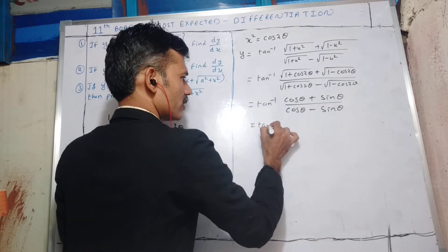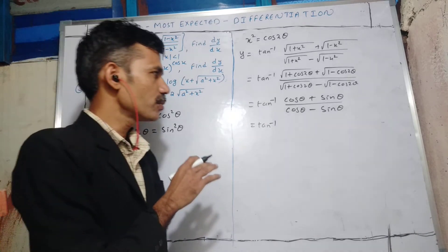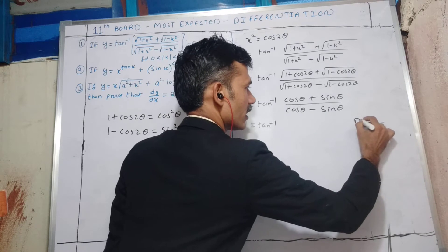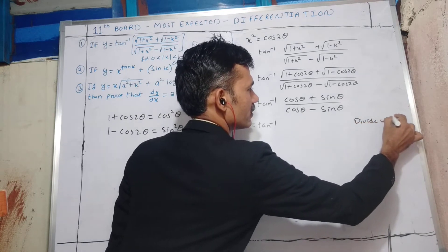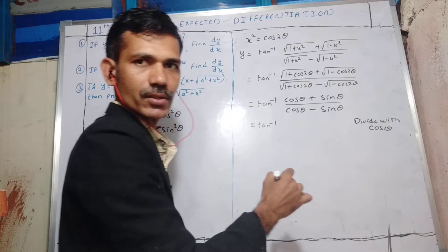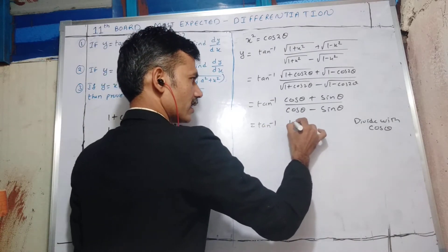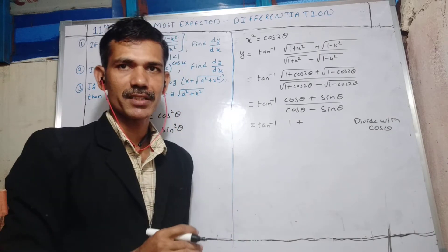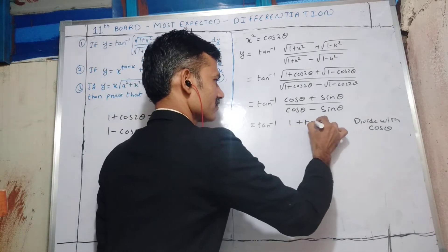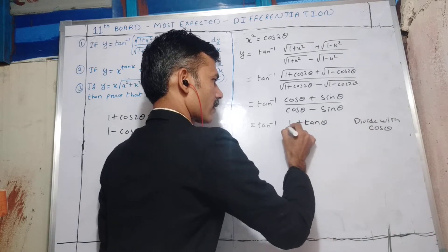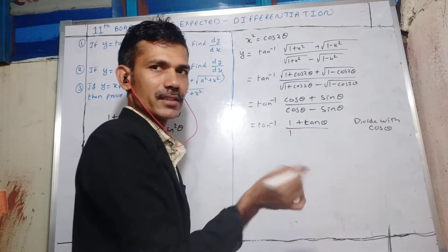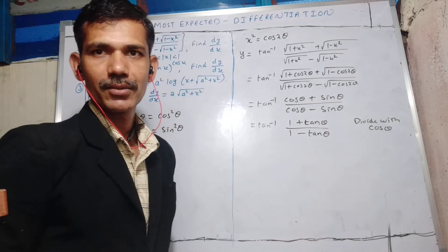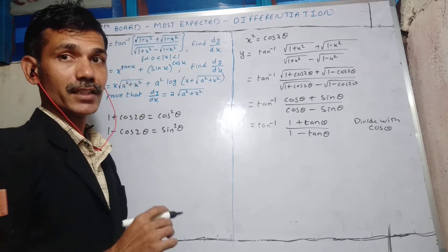Now we can simplify further. Divide both numerator and denominator by cosθ. cosθ divided by cosθ gives 1, and sinθ divided by cosθ is tanθ. So we get 1 + tanθ in the numerator and 1 - tanθ in the denominator.